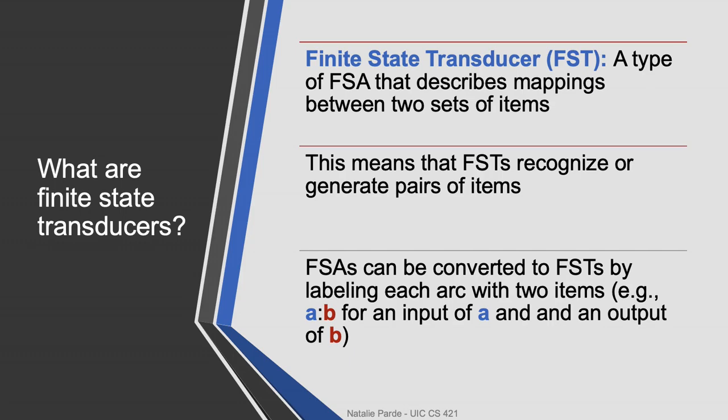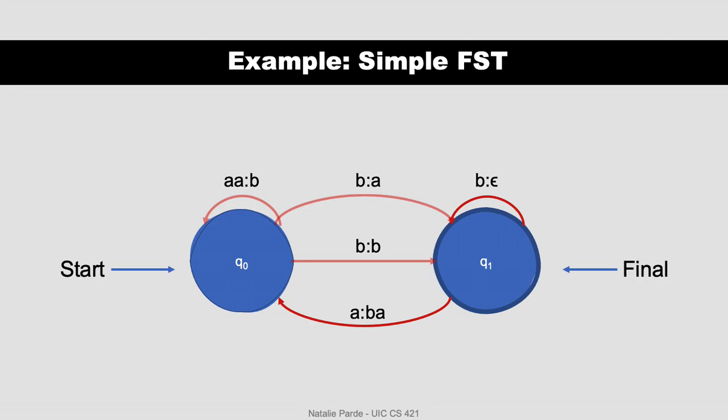Finite state transducers are basically finite state automata that describe mappings between two sequences of items. You can convert finite state automata to finite state transducers by labeling each transition with two items instead of one: an input item and an output item. For each transition, the input is shown to the left of the colon and the output is shown to the right.